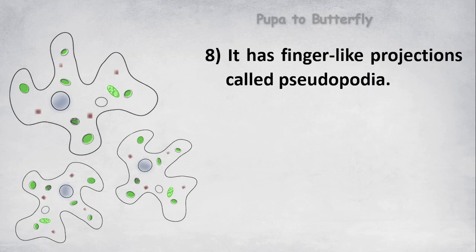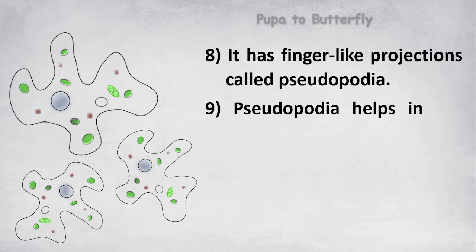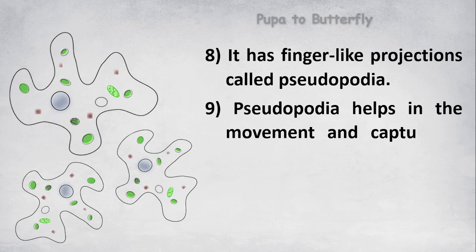It has finger-like projections called pseudopodia. Pseudopodia helps in the movement and capture of food.